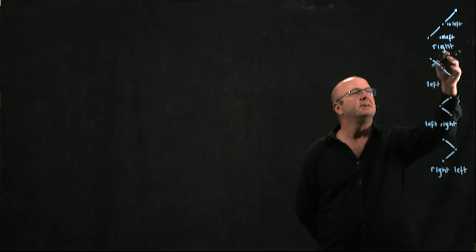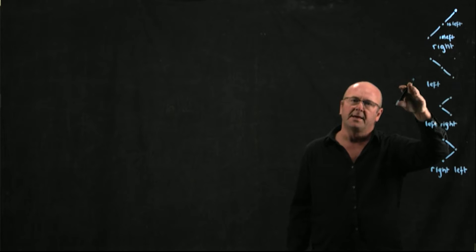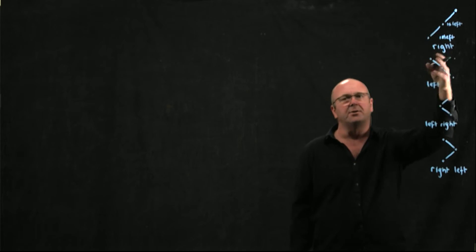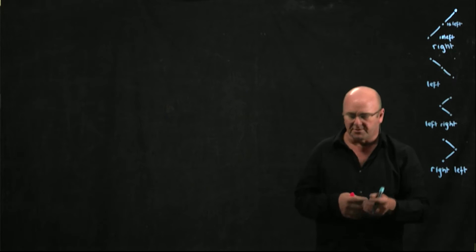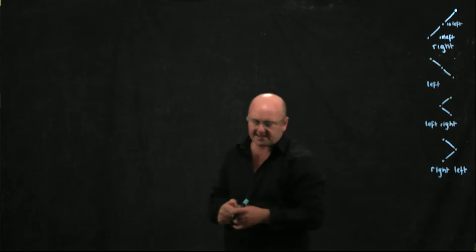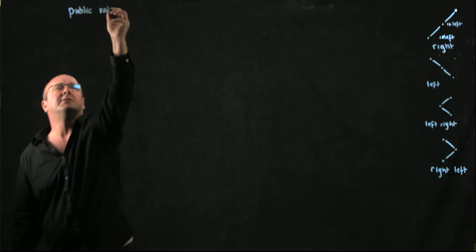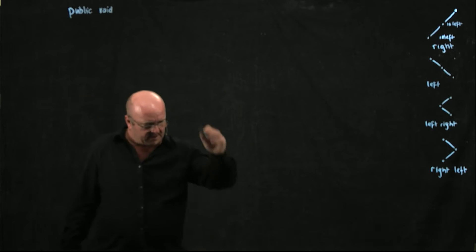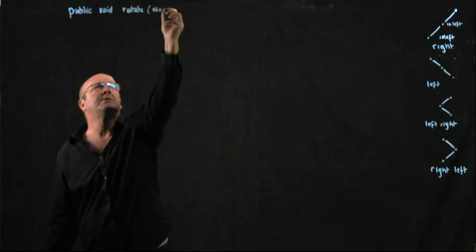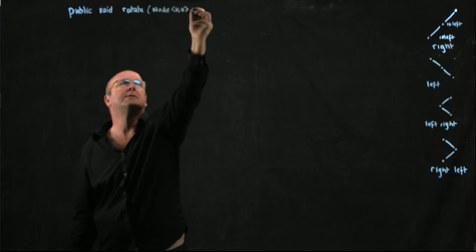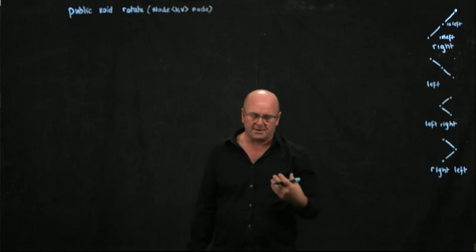Our rotation method is going to look at whether we're a left child and whether our parent is a left child. Depending on which one it is, we're going to call left rotation, right rotation, left-right, or right-left. We're going to have a public void rotate method that takes the node that's causing the violation, because we need to know: are we a left child, and is our parent a left child?